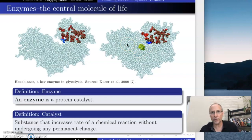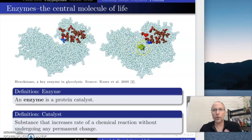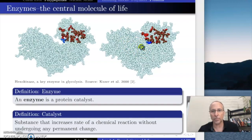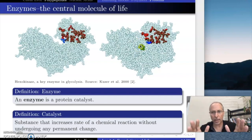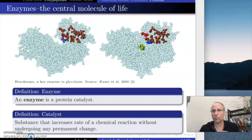What enzymes do is catalyze some reaction. In this particular case, hexokinase is catalyzing the reaction of putting a phosphate group on one of the carbons on the sugar. We're going to study how they work later on in detail. Right now our point is understanding why it is that enzymes are so important — and they are important.